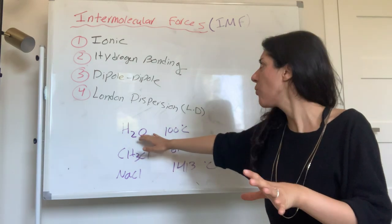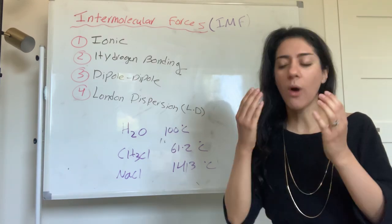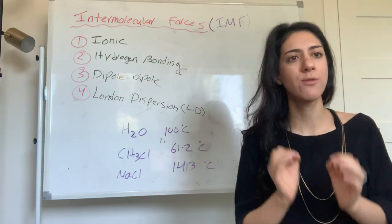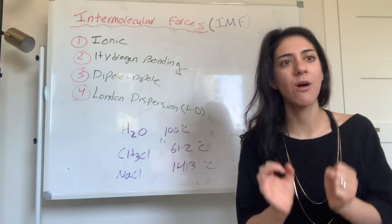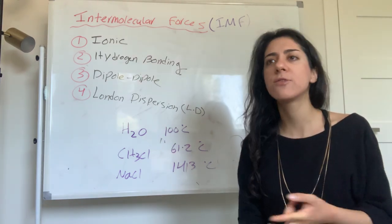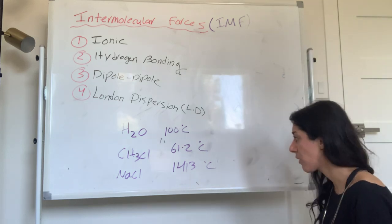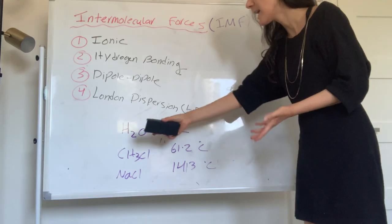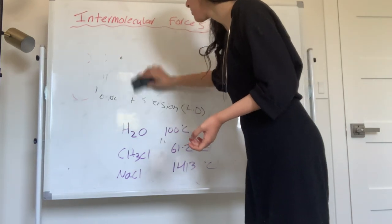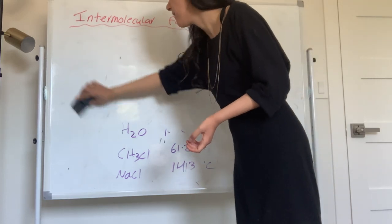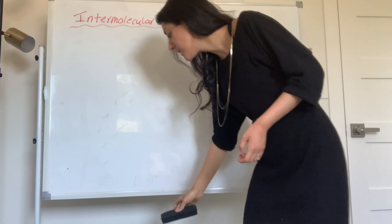Water has hydrogen bonding and ionic forces, so it has the second highest boiling point. We care about intermolecular forces because they determine physical properties — boiling point, freezing point, viscosity, vapor pressure. If you know the intermolecular forces, you can predict physical properties without actually measuring them. You can say: this probably has a high IMF, so it would have a high boiling point.